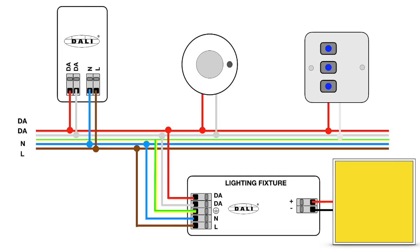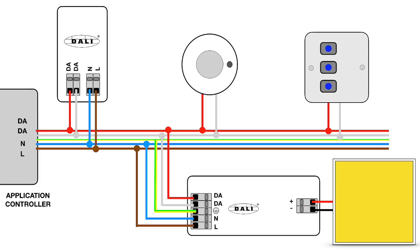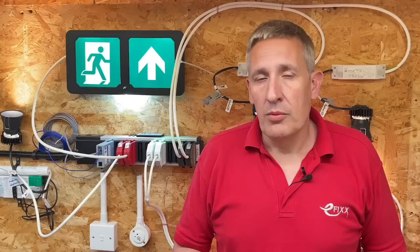You can have up to 64 control devices connected along with the lighting fixtures. The last piece of the jigsaw is called the application controller, or the system's brains. This device is programmed to decide which lights respond to the various sensors and inputs to the system.